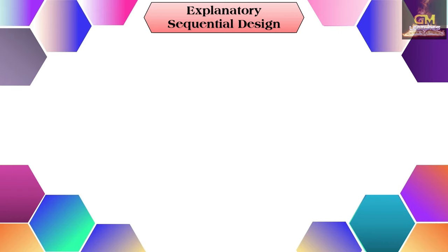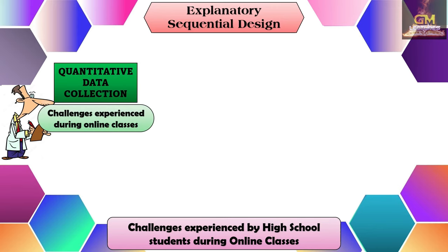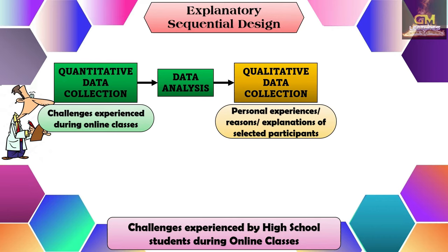Consider this example: determining the challenges experienced by high school students during online classes. Since this is an explanatory sequential design, the researcher would first conduct quantitative data collection. In this case, the quantitative data would be the challenges experienced during online classes. From there, the researcher conducts data analysis to come up with initial results. Afterwards, qualitative data collection follows.